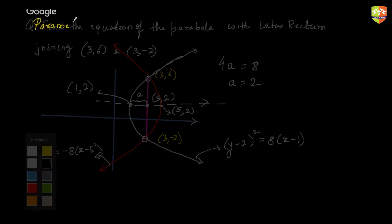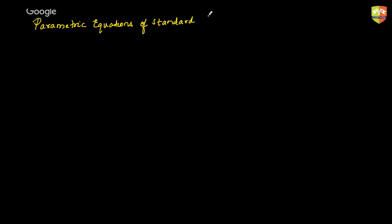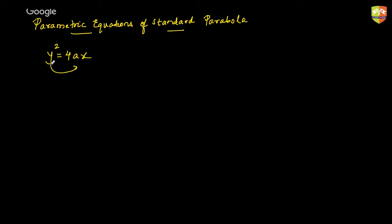Next we are going to talk about parametric equations — specifically the parametric equations of a standard parabola. I had spoken about parametric equations of a circle earlier, and this time I am going to talk about the parametric equation of a parabola. A parametric equation is basically an equation where instead of directly relating x and y, you relate them with the help of a parameter.